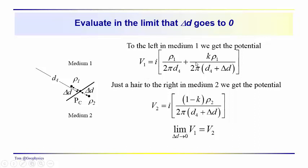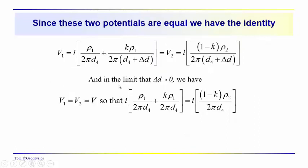And these two relationships should be equal to each other. So we have this relationship. V1 should be equal to V2 when δD goes to 0. We're letting δD go to 0. We have I ρ1 over 2π D4 plus k ρ1 over 2π D4 should be equal to I times (1 minus k) times ρ2 over 2π D4.